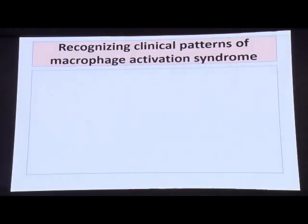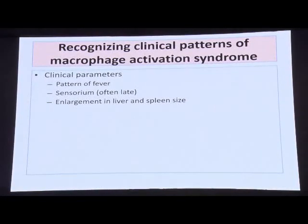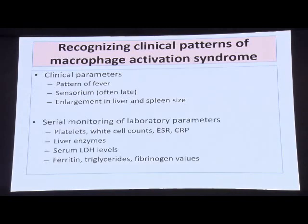The clinical pattern to recognize includes change in fever pattern, drop in counts, drop in ESR, rise in CRP, hypertriglyceridemia, hypofibrinogenemia, and hyperferritinemia. Serial monitoring of laboratory parameters is most important — platelet counts, white cell counts, ESR, CRP, liver enzymes, serum LDH, ferritin, triglycerides, and fibrinogen levels.